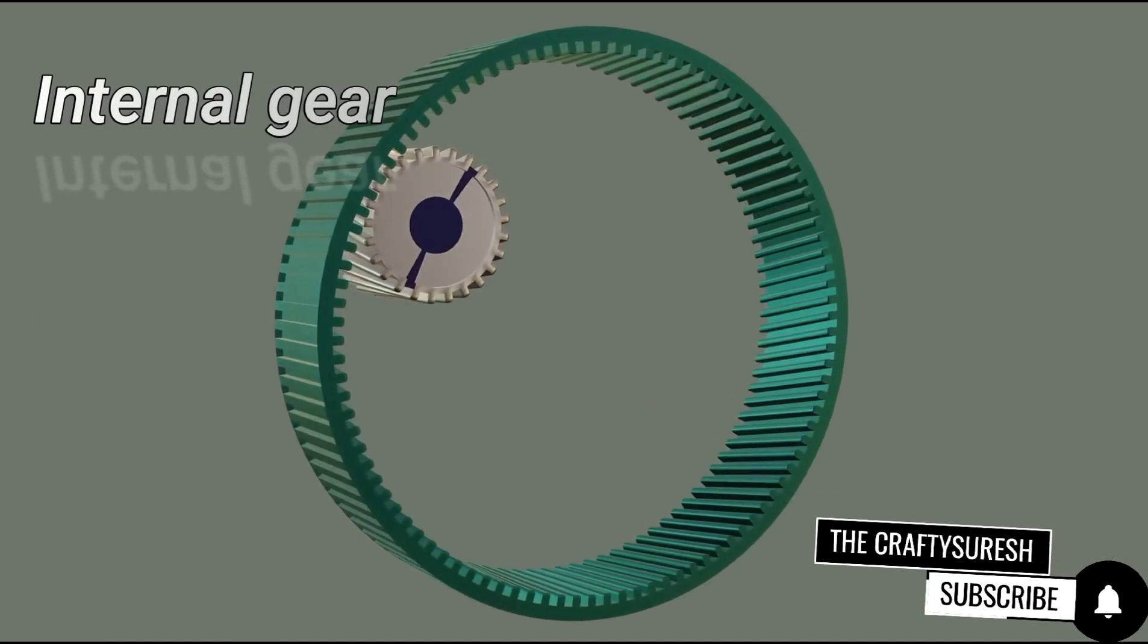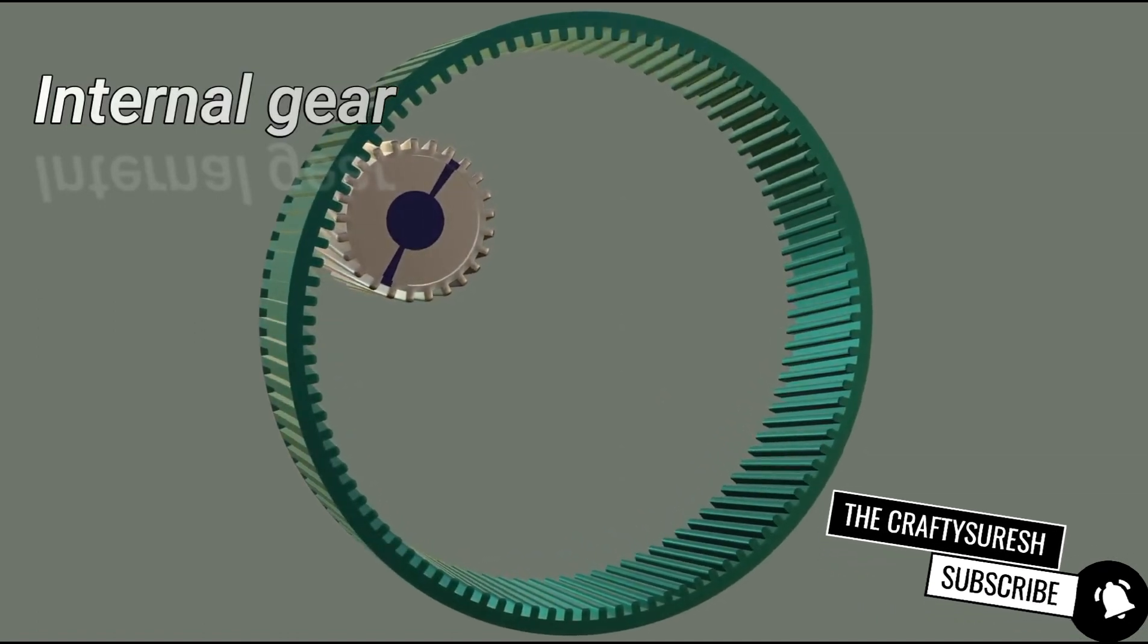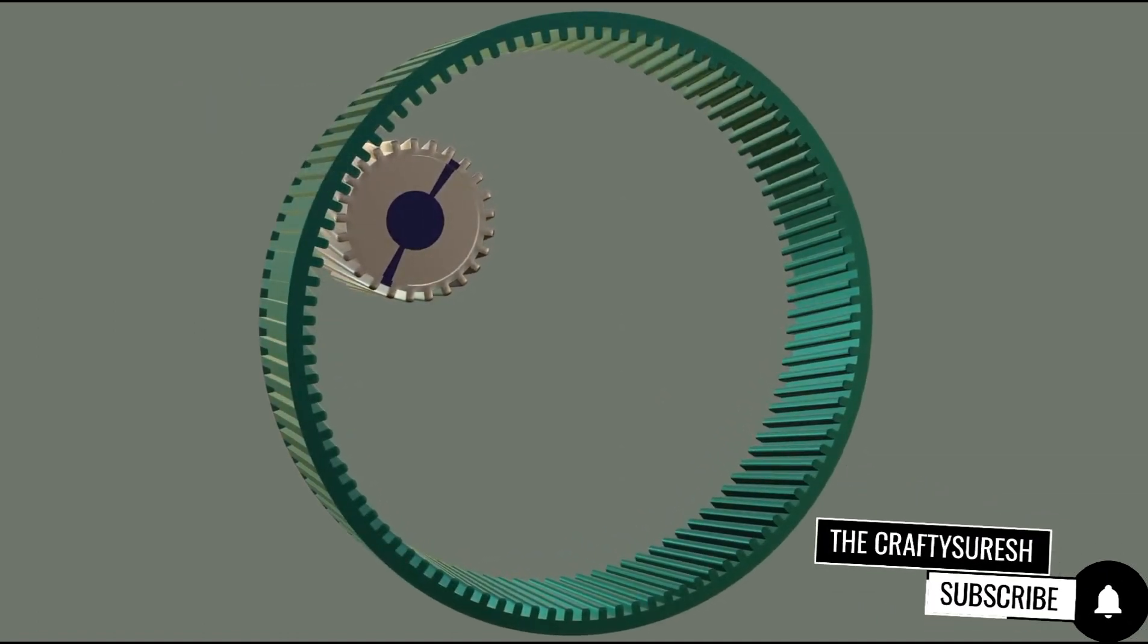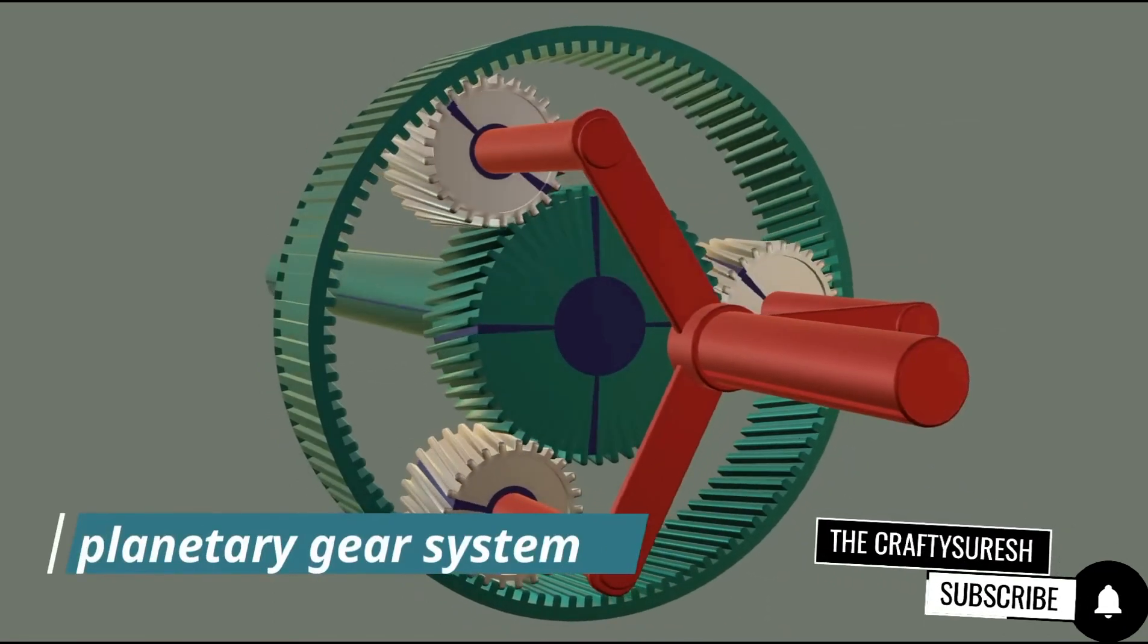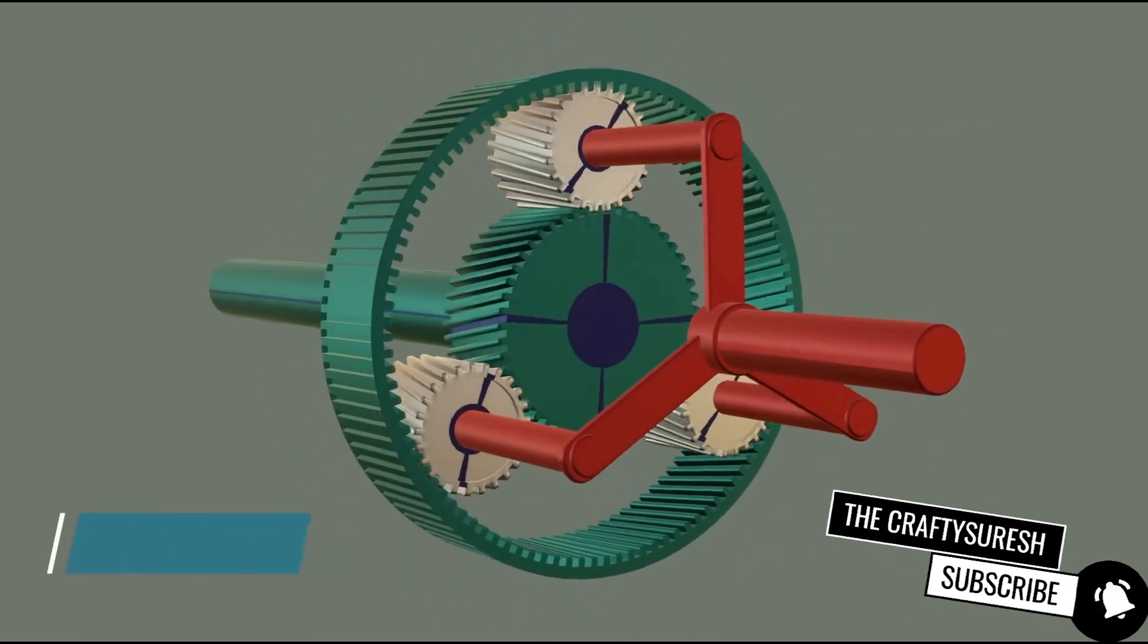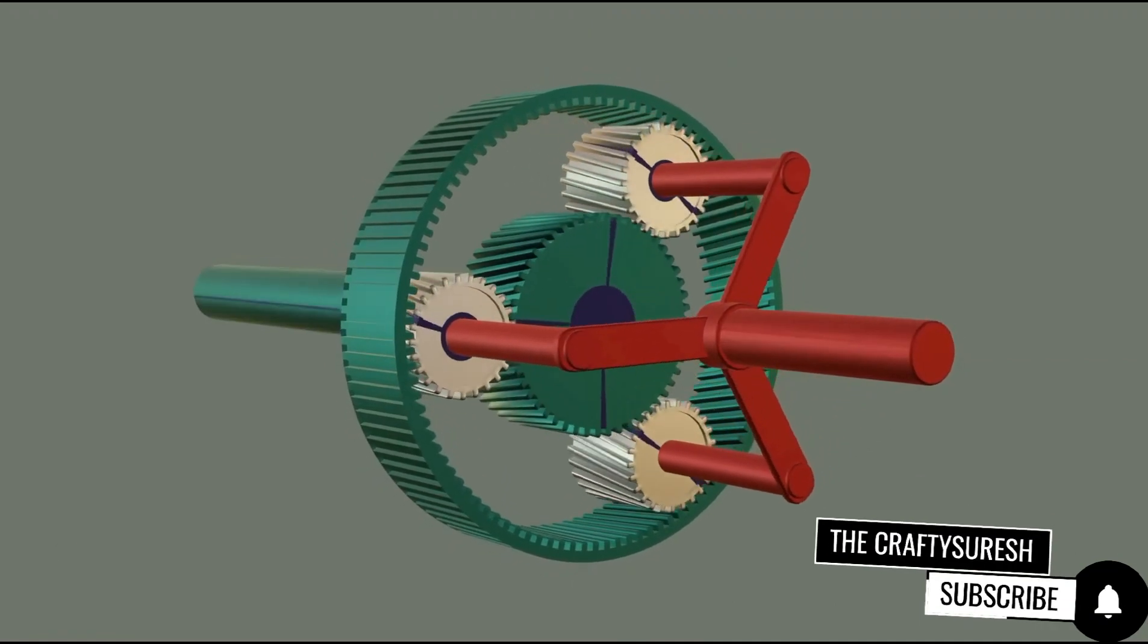Now the most important gear is called the internal gear. All the gears we have seen so far had teeth on the outside of the sub, but this gear has teeth on the inside. And the planetary gear system is the part of this.